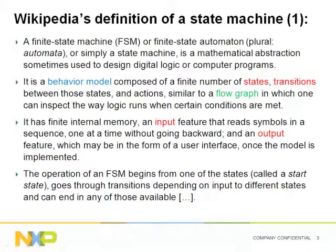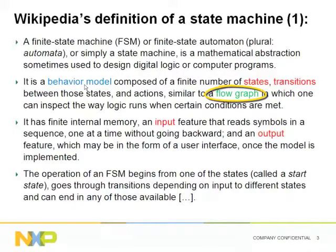This is what Wikipedia says about state machines. In this generic description we have highlighted the relevant keywords which are of interest. A state machine is a behavioral model. It describes how a system will behave in a graphical way. It describes the system by means of a flow graph, which is composed of different states. The graph shows how the system can evolve between those states by means of defined transitions.